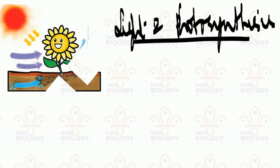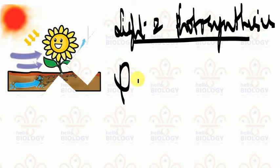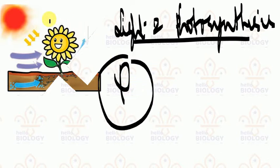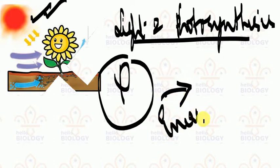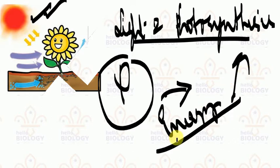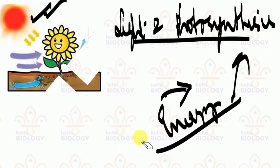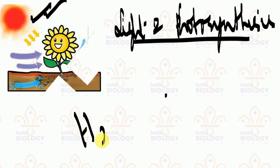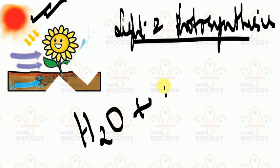Today we will discuss light and photosynthesis. When Priestly was doing his bell jar experiment, the team was not confirmed about how energy is required for photosynthesis. Later scientists discovered how energy is applied to and used by the plant. Every plant absorbs water from the soil and also absorbs a sufficient amount of carbon dioxide.